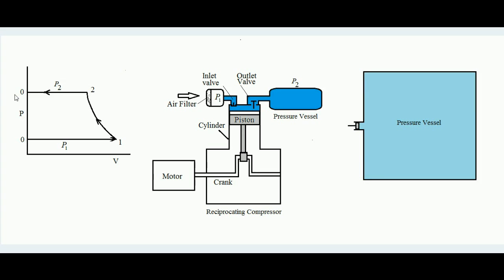This is the complete PV diagram of the cyclic process for one suction and compression stroke of the reciprocating compressor. Now let's find the work done for this case.